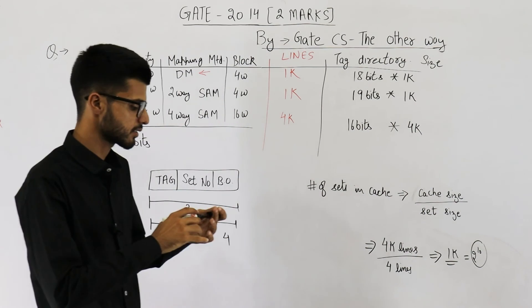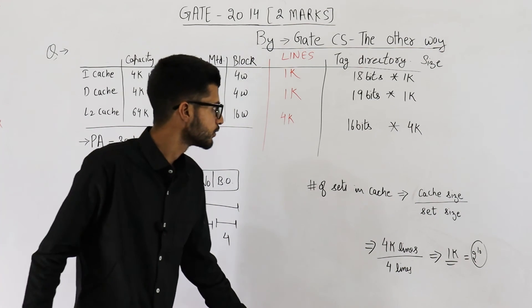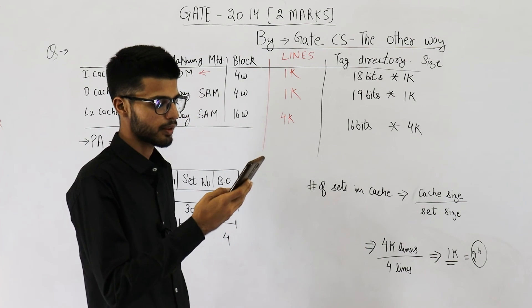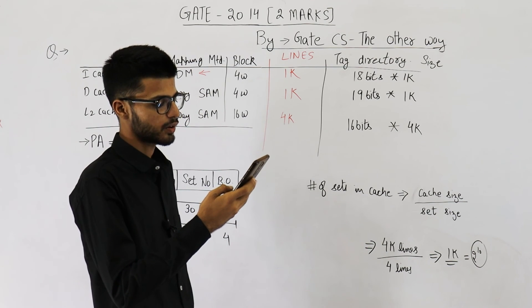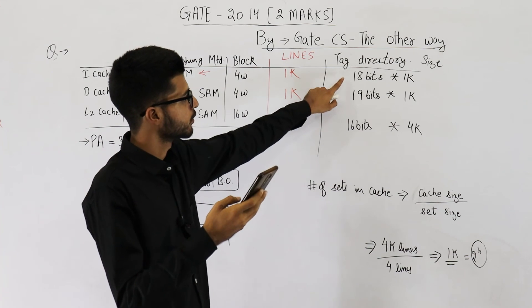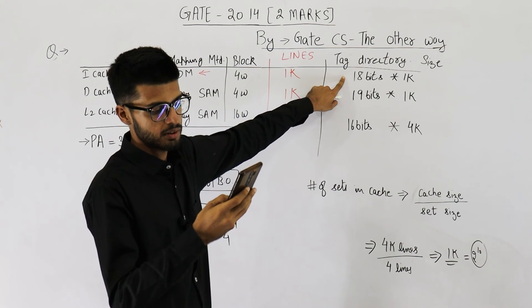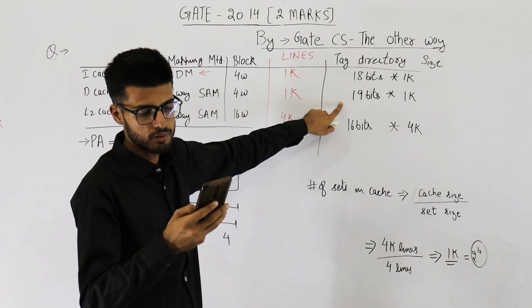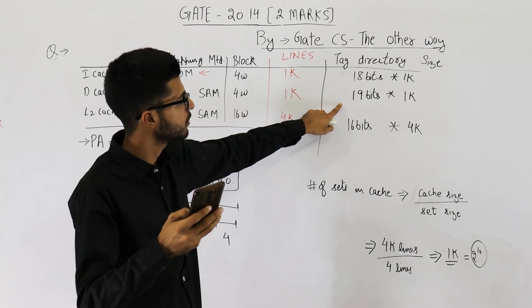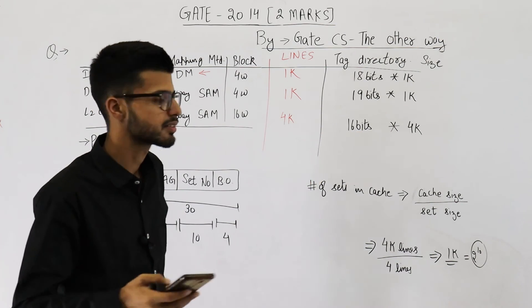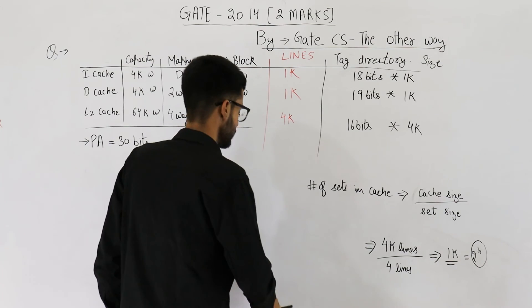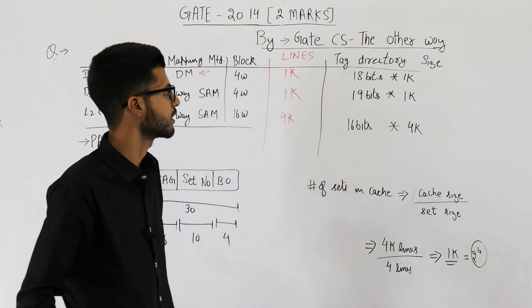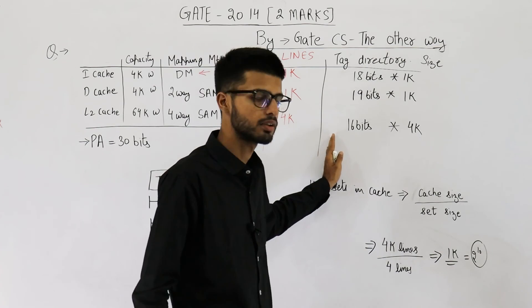Checking against the options: I-cache = 18 bits × 1K, D-cache = 19 bits × 1K, L2 cache = 16 bits × 4K. All three values are present in the options and the answer is option A.